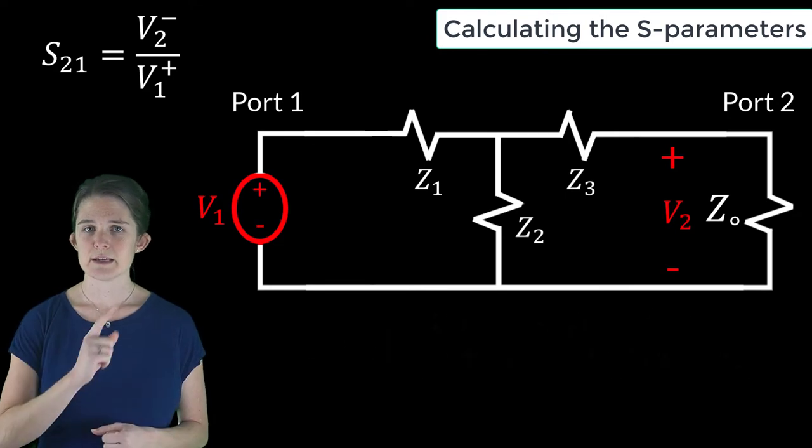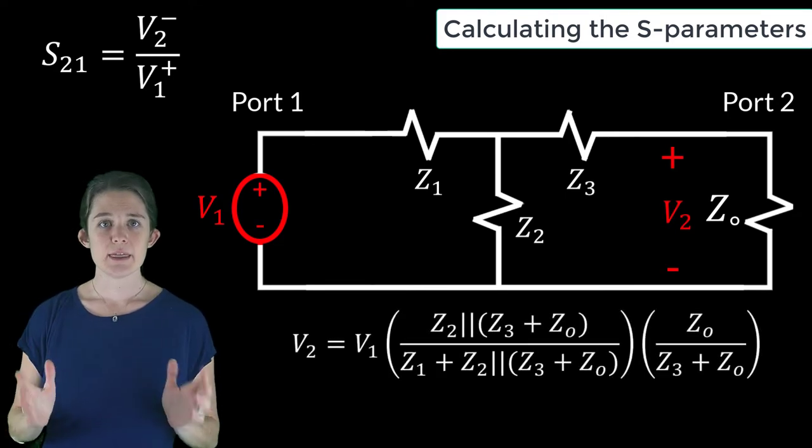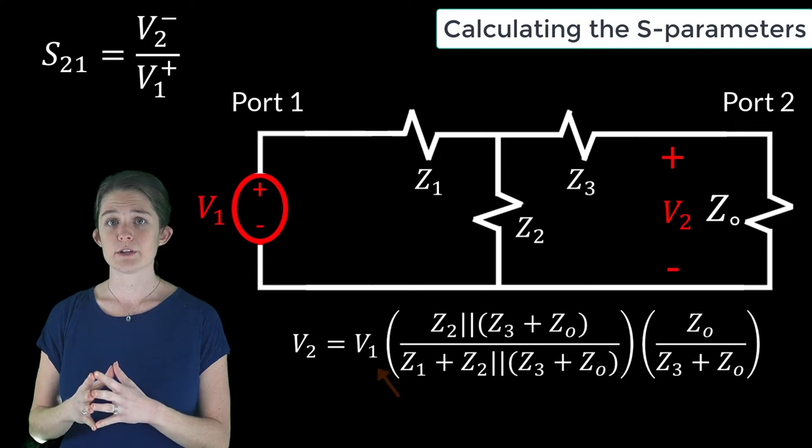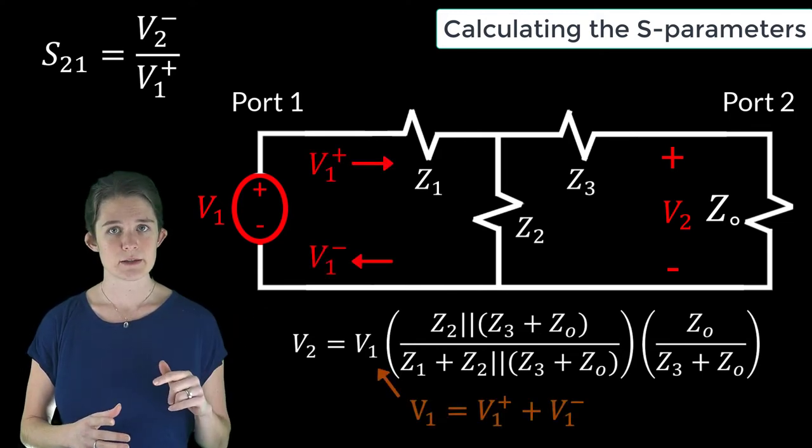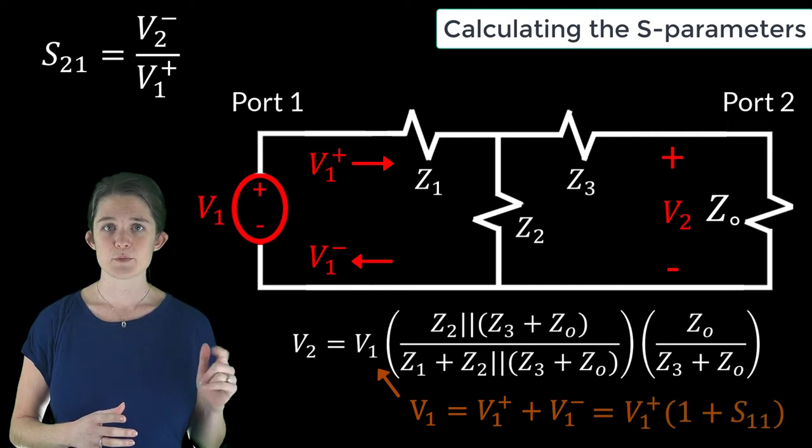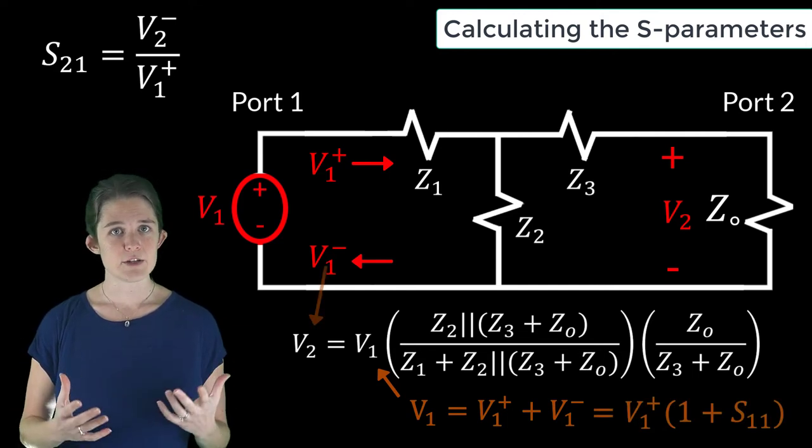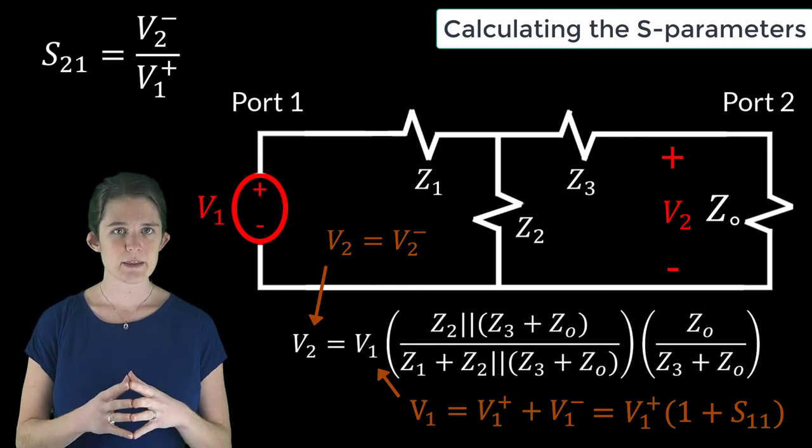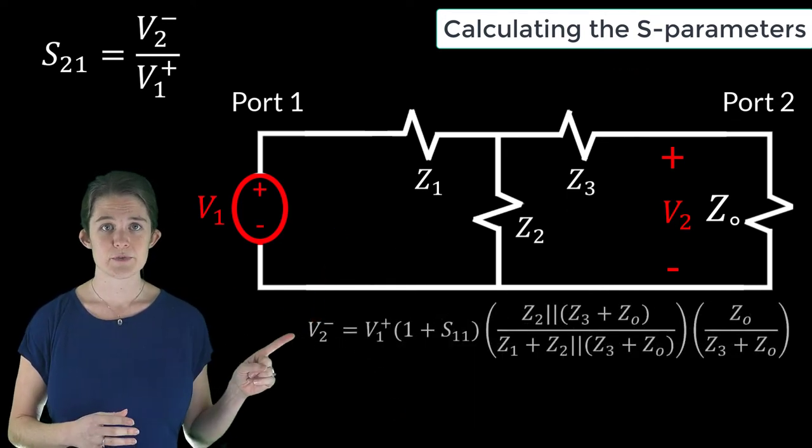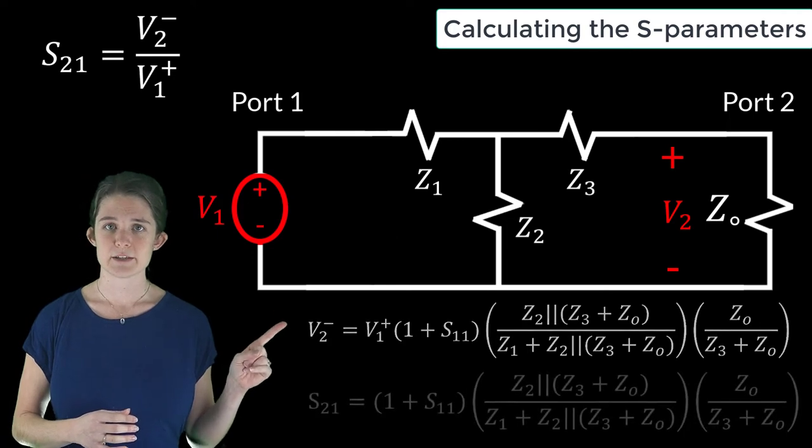Then we need to remember that the total port voltage at port 1 is equal to V1 plus plus V1 minus, or V1 plus times 1 plus S11. And V2 is equal to just V2 minus because port 2 is matched terminated. So if we plug these in, our equation becomes this, so that S21 is given by this equation.